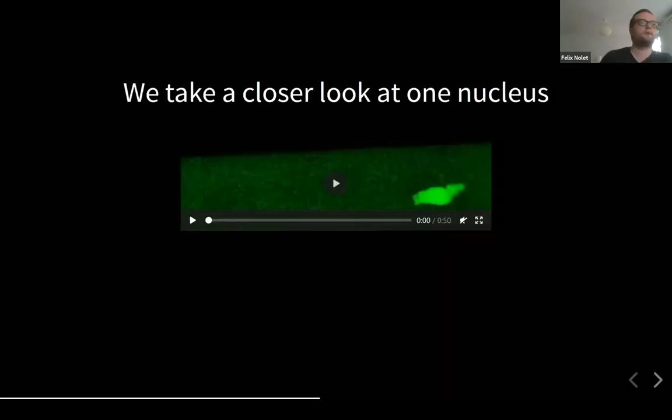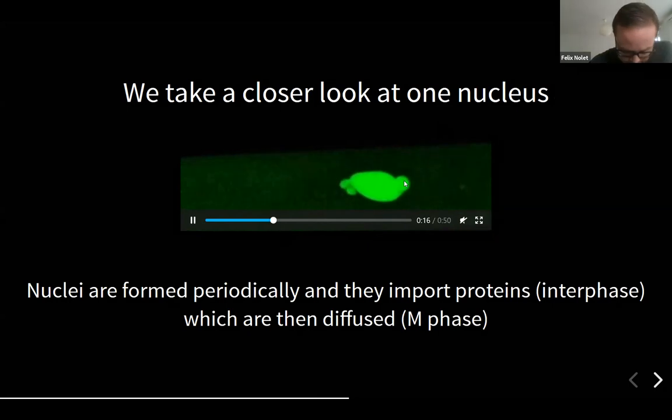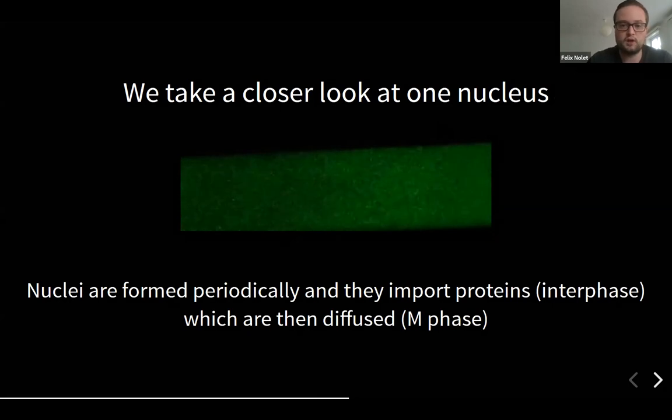To model this, to make a model that explains which one will organize these waves, we first take a closer look at one of the experiments at the tube to see what the dynamics are. We see clearly in interphase, nuclei become brighter and brighter. And in the end, when they go into mitosis, this GFP is diffused away. This behavior is clearly periodic.